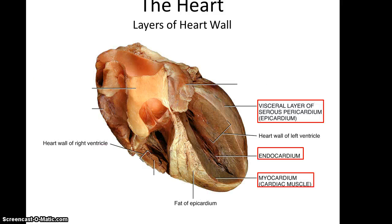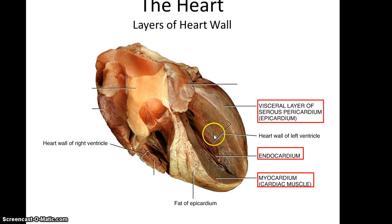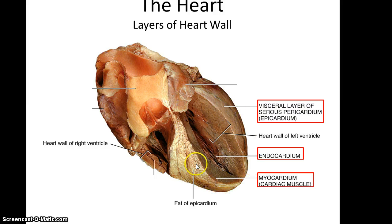Here's a picture of an actual heart. You can sort of see the endocardium in there, slightly different in color from the myocardium, or heart muscle tissue. And lying on the very outside is the visceral layer of the serous pericardium, which is referred to as the epicardium, as well as some fatty tissue.